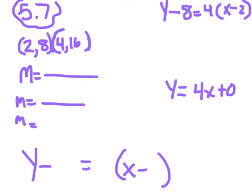So I'm doing 5.7, which is writing an equation in clean standard form. And my two points are 2, 8, and 4, 16.